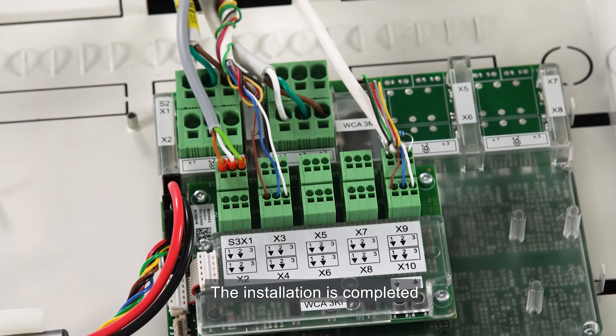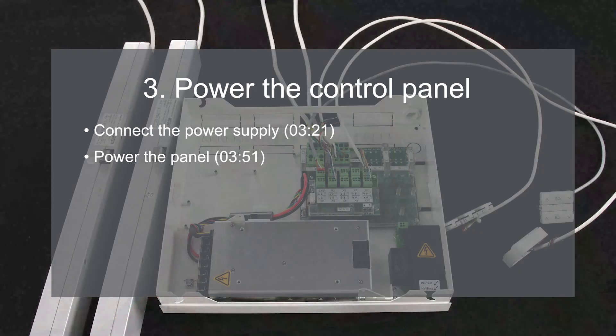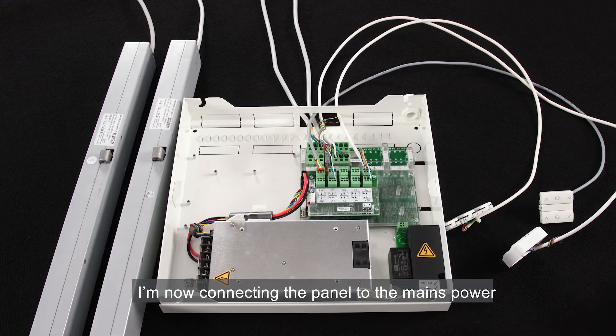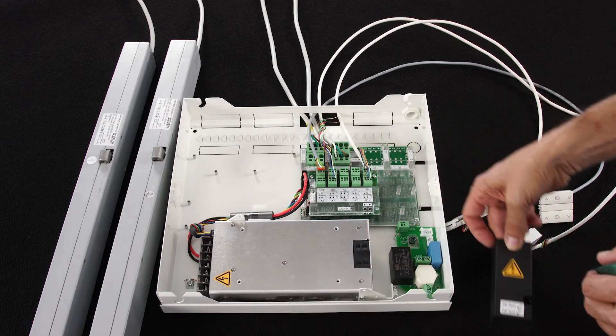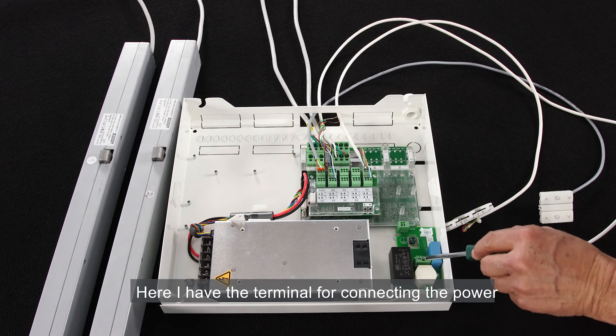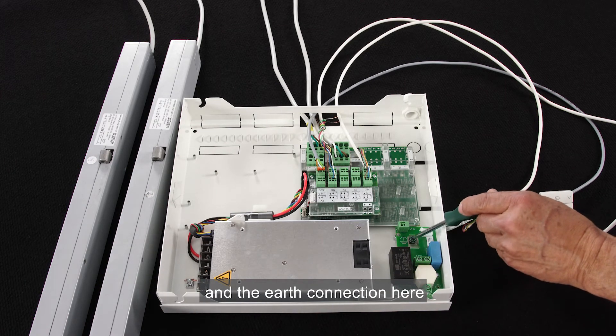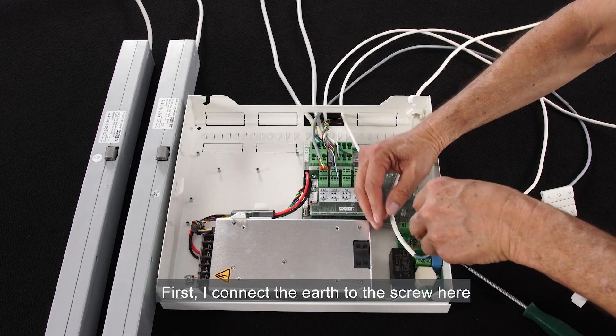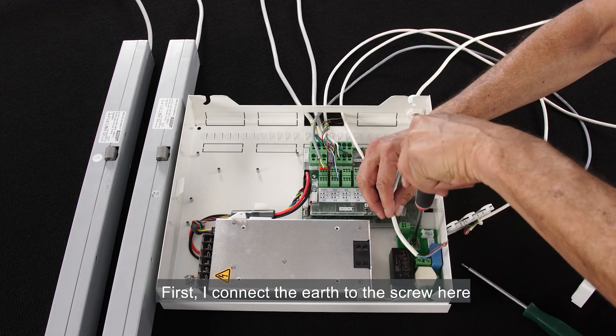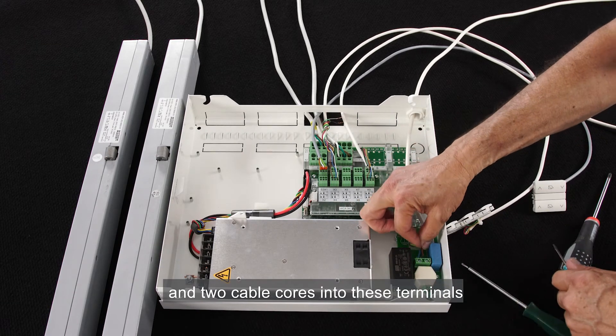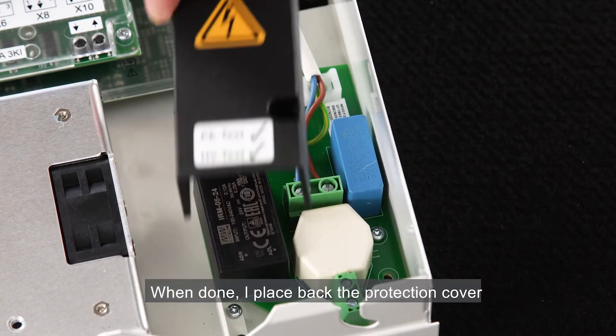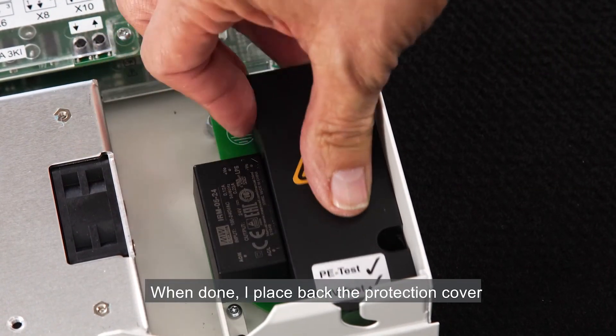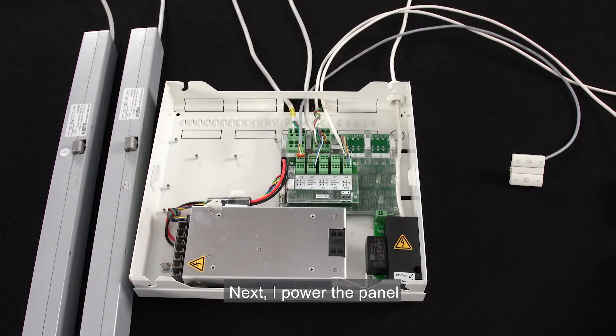The installation is completed. I am now connecting the panel to the mains power. I remove the black plastic cover here. Here I have the terminal for connecting the power and the earth connection. First, I connect the earth to the screw here and two cable cores into these terminals. When done, I place back the protection cover. Next, I power the panel.